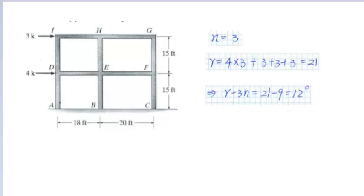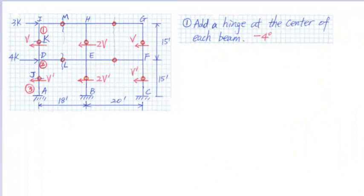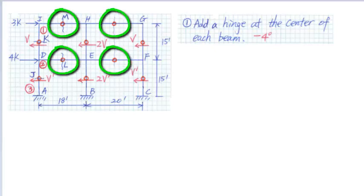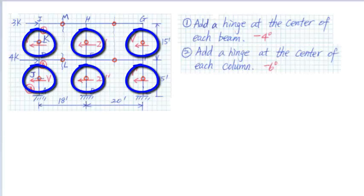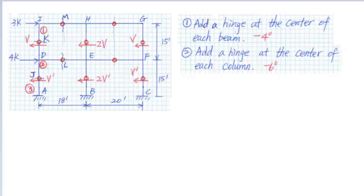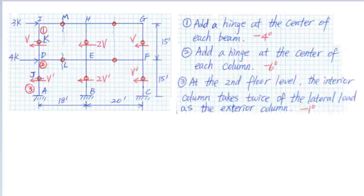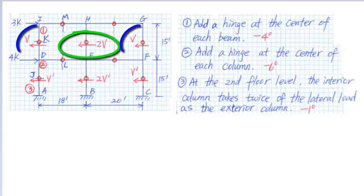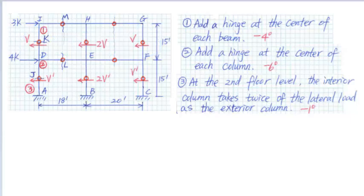Therefore, we need 12 additional equations or assumptions to reduce this frame to statically determinate. Using the portal method, we make the following assumptions: first, we add a hinge at the center of each beam, which reduces 4 degrees of indeterminacy. Second, we add a hinge at the center of each column, reducing 6 degrees of indeterminacy. Then, we assume that at the second floor level, the interior column takes twice the lateral load as the exterior column, providing one additional equation and reducing 1 degree of indeterminacy.